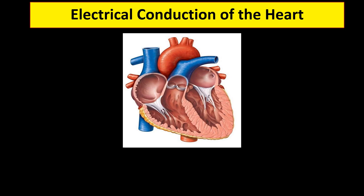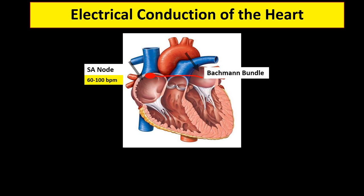Let us review first the normal electrical conduction of the heart. Normally, conduction starts from the normal pacemaker of the heart, which is the sinoatrial node or SA node, which has an inherent beat of 60 to 100 beats per minute. The SA node is located at the right atrial superior vena-caval junction. By virtue of its location, the right atrium contracts first by a few milliseconds than the left atrium. Nevertheless, both atria seemingly contract simultaneously because electrical conduction rapidly travels from the right atrium to the left atrium through the Bachmann bundle. The depolarization of both atria can be seen as P wave on surface ECG.